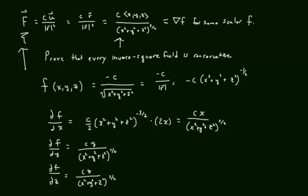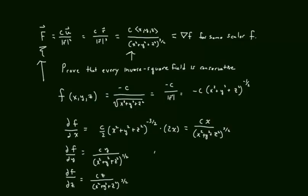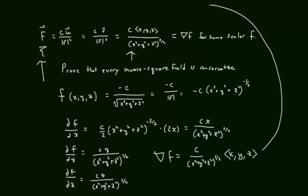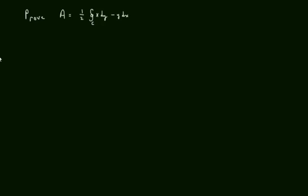Likewise, partial f partial y and partial f partial z equal as follows. From this, we can say that del f equals c times vector (x,y,z) over x squared plus y squared plus z squared to the three-halves, which is exactly what we wanted to show. QED.